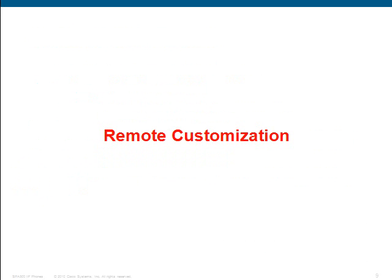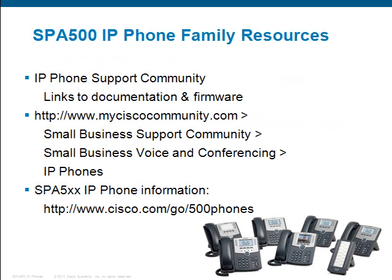Another way of configuring the phone is with remote customization. Remote customization is for service providers or large volume purchases of phones. This is because the phone is burned with a special image at the factory, which causes the phone, when it's first powered up, to contact Cisco's provisioning servers. The Cisco servers point back to the service provider, and the service provider's servers then configure and provision the phones appropriately.